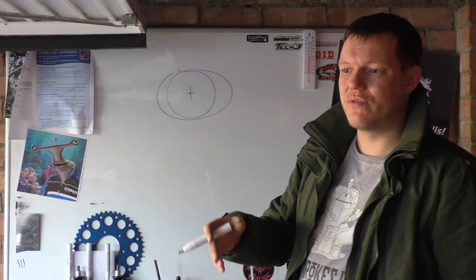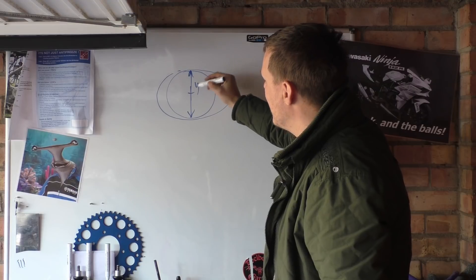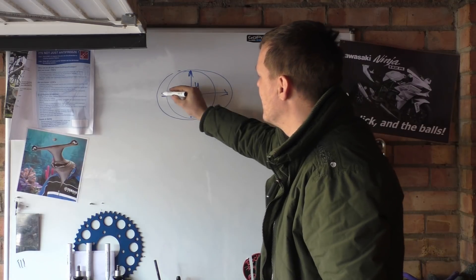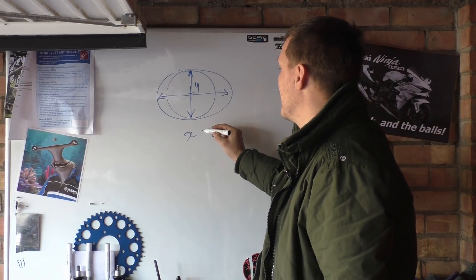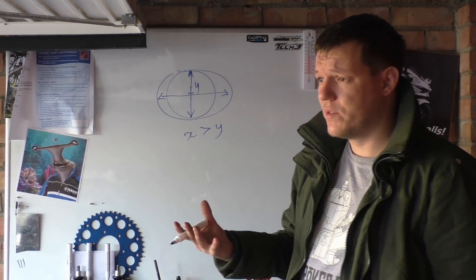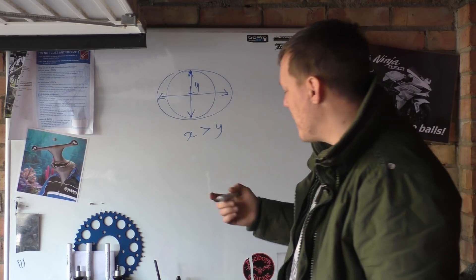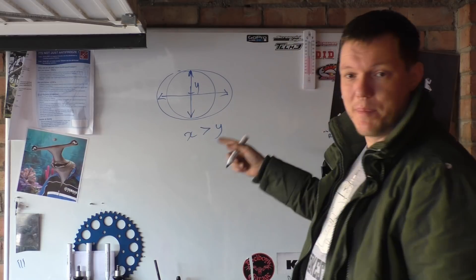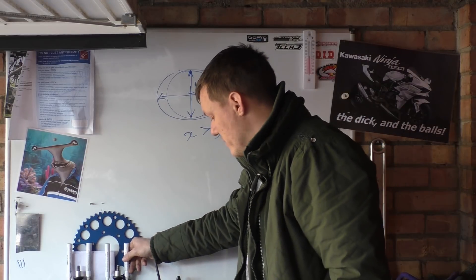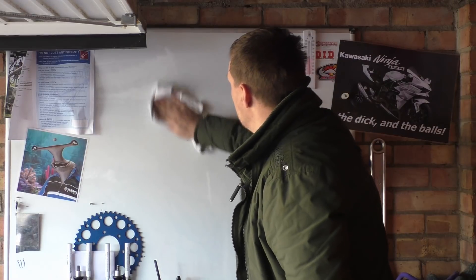If you measure just say your Y here and you measure your X, your X will be greater than your Y. You know, this is just ovaling or egg shaping or what have you. But why does this happen and why does it only happen along one axis? The reason why is down to what we call piston slap.